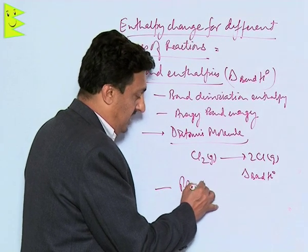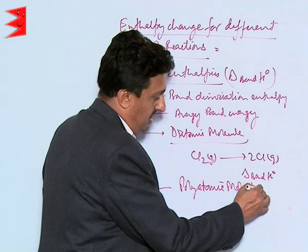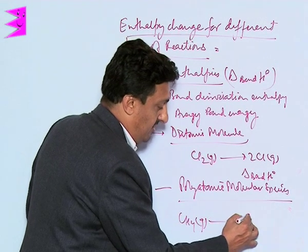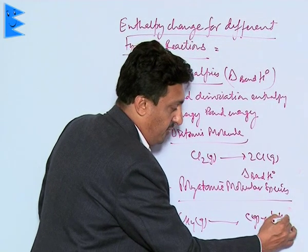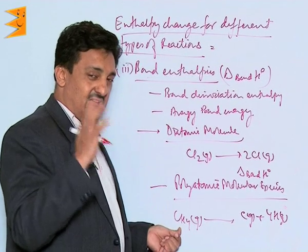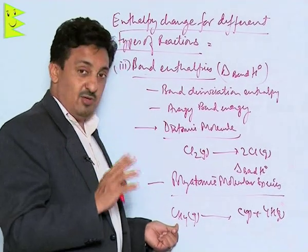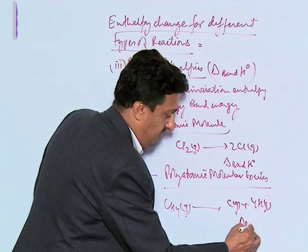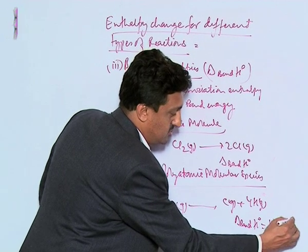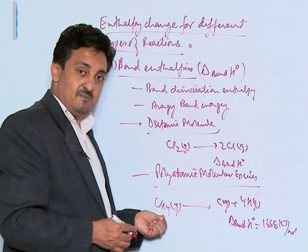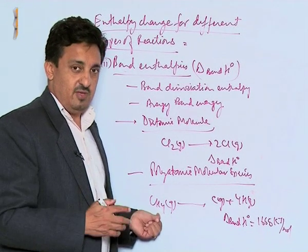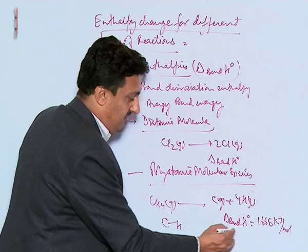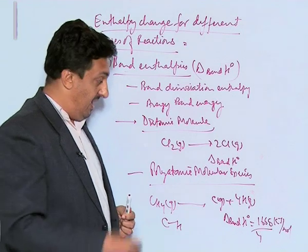But if we have a polyatomic molecular species — for example, methane in the gaseous state — we give energy to get carbon gas plus four hydrogen gas atoms. In one molecule there are four C–H bonds, so for one mole of CH4 we break four moles of C–H bonds. The overall bond enthalpy comes out to be 1665 kJ/mol. But since four C–H bonds are broken, to find the bond enthalpy of one C–H bond, we divide by four.